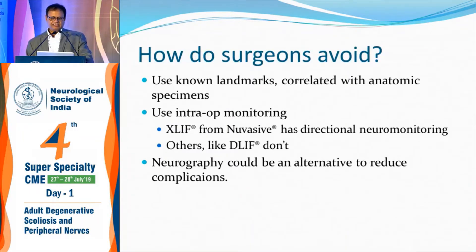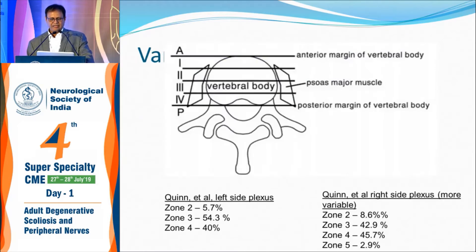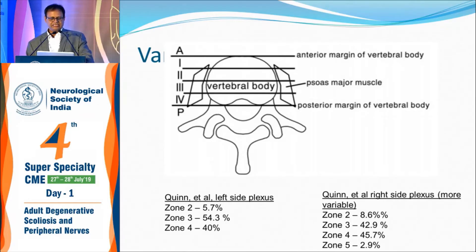To avoid lumbar plexus damage, one can use intraoperative monitoring to stimulate and confirm no nerve damage, though this increases the cost of treatment. Alternatively, MR neurography can identify exactly where the lumbar plexus is in relation to the vertebral body. The safe zones are zone 1 and 2 of the body. In zone 3, the plexus is almost 42%, and in zone 4, approximately 45%. Remaining in zone 1 and 2 avoids lumbar plexus damage; zone 3 and 4 should be avoided.